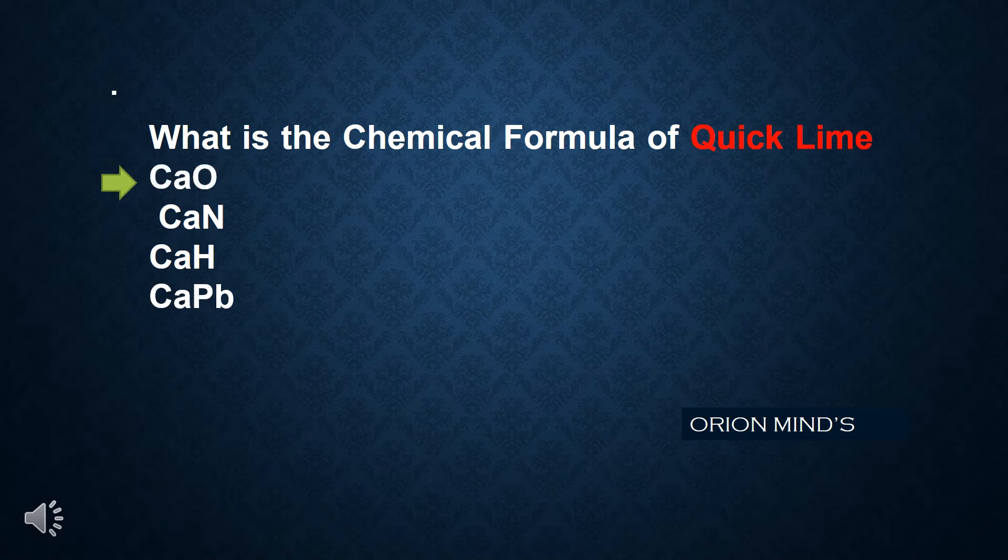What is the chemical formula of quicklime? The answer is CaO — Calcium oxide.